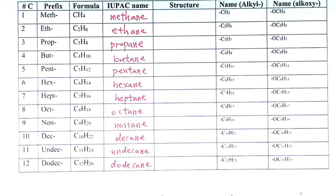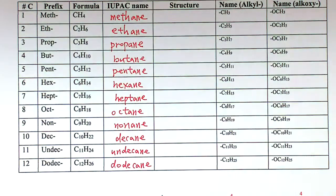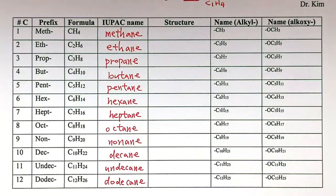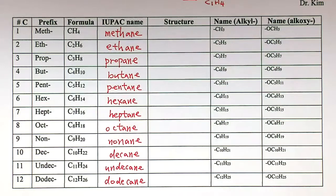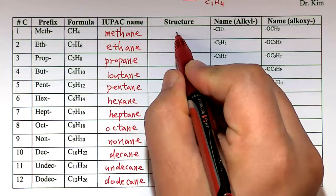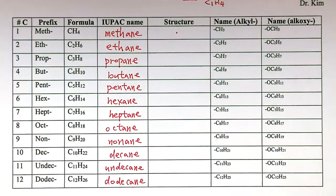Sorry for the adjustment — sometimes this happens. The screen is okay now. The structure of methane — 1 carbon — we use a dot for carbon in the skeletal structure. That's the CH4 skeletal structure.